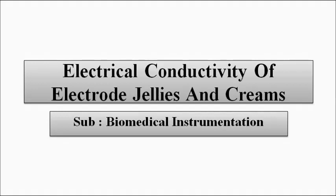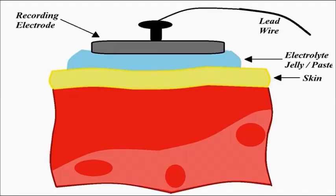We all know that electrodes are used for the measurement of biomedical signals, but these electrodes are not applied directly to the skin for a number of reasons. The most important reasons are to avoid causing any infection or any abnormal reaction from the patient, and to increase the efficiency of recording the measurement. There are many reasons why we use electrode jellies or creams as an interface between the electrode and the skin.